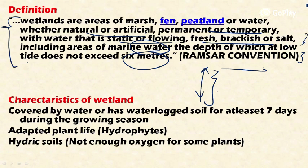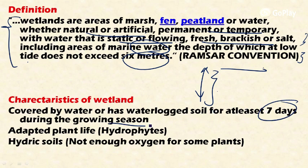Important characteristics of wetlands include: they are covered by water and have waterlogged soil for at least seven days during the growing season. They also have a distinct adapted plant life — the flora — called hydrophytes, which are adapted to the waterlogged conditions of wetlands.